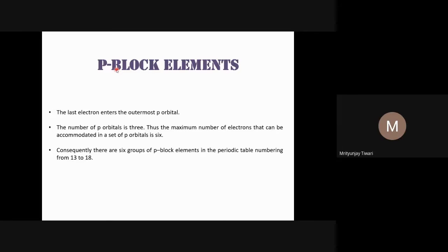The P-block elements are those elements in which the last electron goes to a P-orbital or P-sub-shell while writing the electronic configuration. We know how to write the electronic configuration using the (n + l) principle — just get the sum of n plus l, and based on that you can build up the entire electronic configuration.